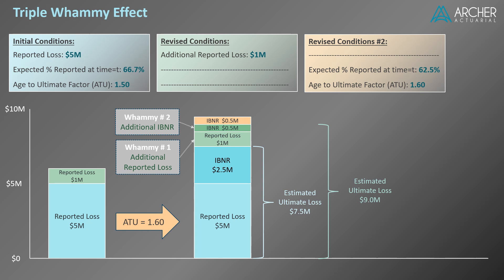An additional $500,000 of IBNR is needed to reflect the revision to the development pattern. But we're not done yet — we also need to apply the higher development factor to the additional $1 million of reported loss. Previously we estimated IBNR of $500,000 related to development on the additional reported loss. Now, with the revised age-to-ultimate factor, that amount is $600,000, so we need yet another $100,000 of IBNR. Whammy number three is the additional IBNR needed related to the revision in loss development assumptions. In total, our estimated ultimate loss is now $9.6 million, compared to the original estimate of $7.5 million — meaning the additional $1 million of reported loss increased our estimate of ultimate loss by $2.1 million.